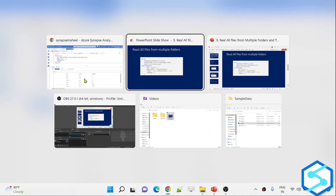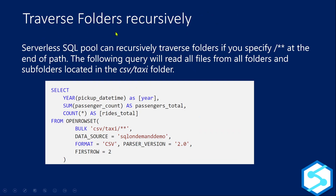The second scenario is how to traverse folders recursively. That means inside a root folder, if there are multiple subfolders, I should be able to traverse through them and read the data. To do that, you use the '**' (double-star) symbol. This makes Synapse SQL recursively traverse inside the root folder. For example, pointing to a 'taxi' folder with '**' syntax will recursively traverse all subfolders and retrieve data from them too.